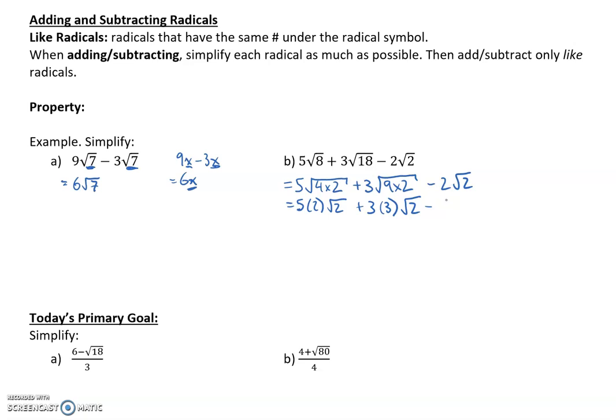This simplifies to 2√2, so 5 times 2 is 10. I have 10√2 plus 9√2 (3 times 3 is 9) minus 2√2. Because these are all the same radicals, I can just do the math with the coefficients: 10, 9, and -2. 10 plus 9 is 19, minus 2 is 17, giving me 17√2.